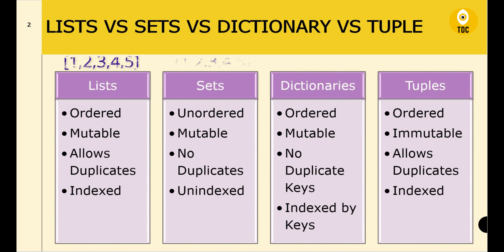Sets are unordered, mutable, do not allow duplicates, and are unindexed. When you define values within curly braces — like one, two, three, four, five — the order doesn't matter; one, two, three, four or three, two, four, five, one are equivalent. There is no concept of indexes like zero, one, two, three. Sets are also mutable, so you can change element values, but unlike lists, sets do not allow duplicates. If you add a value that already exists, it will be ignored — it will deduplicate automatically. Because there are no positions defined for each element, it is unindexed.